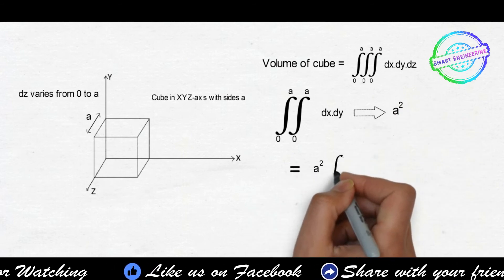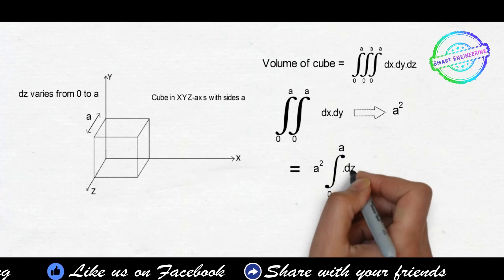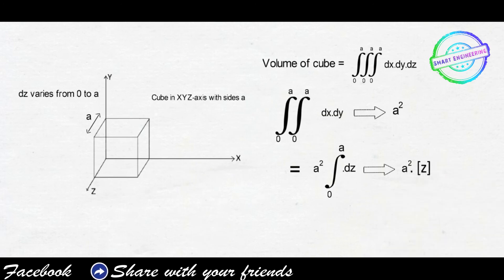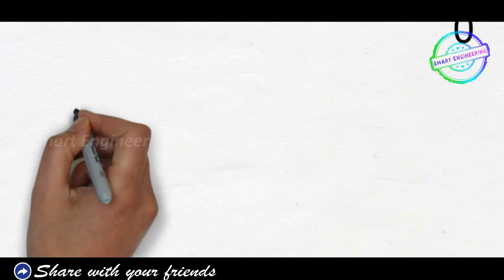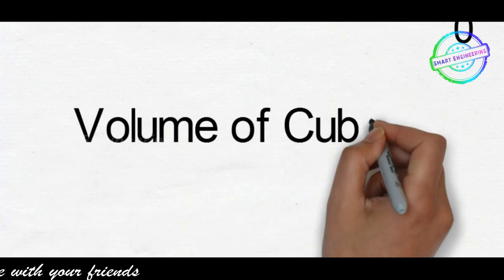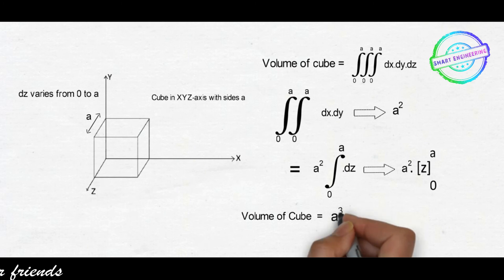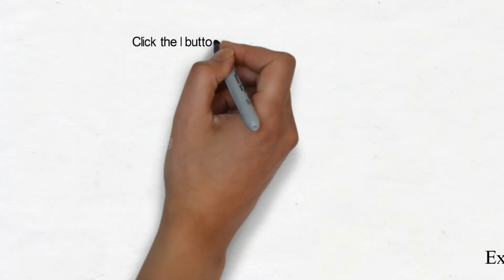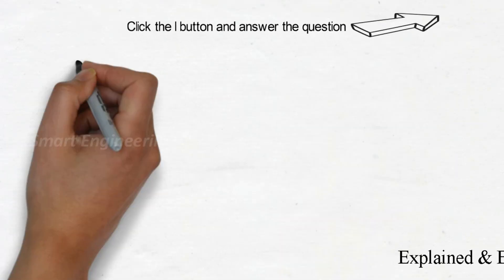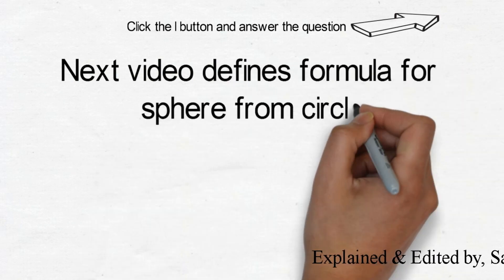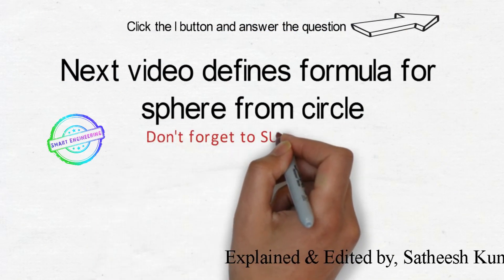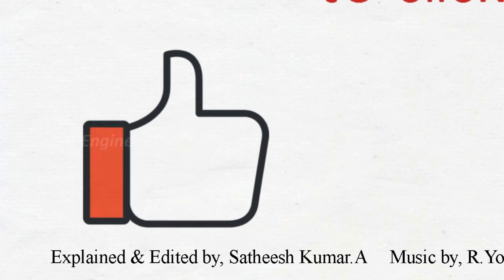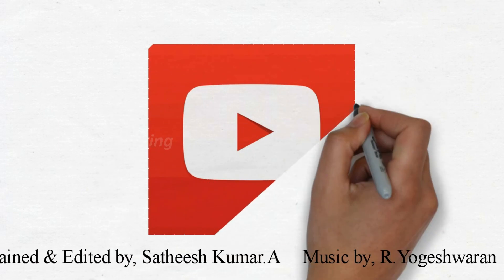Substituting the upper and lower limits with z equal to a gives a squared into a, which equals a cubed. Therefore the volume of the cube equals a cubed. This is how the area and volume formulas are derived. For the circle, we will use a similar formula and see it in another video — please subscribe and click the bell button.